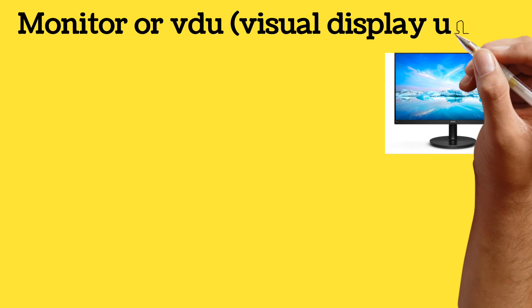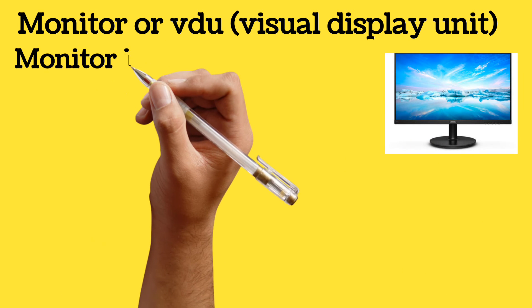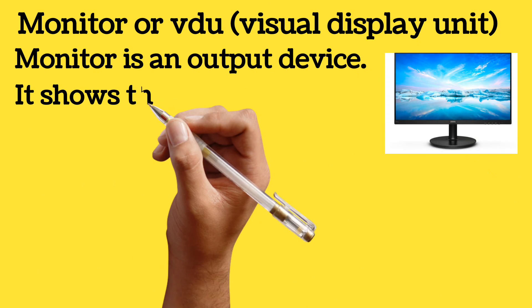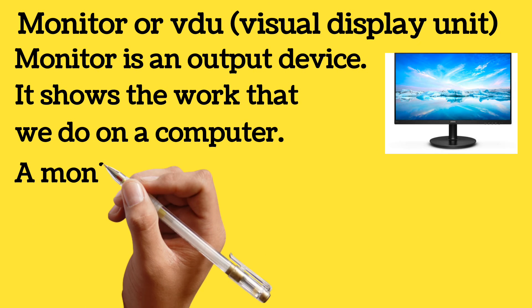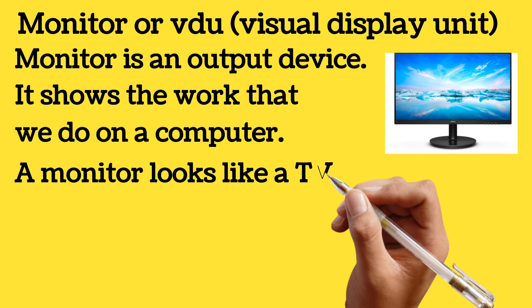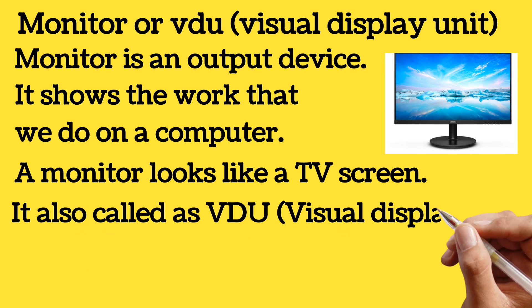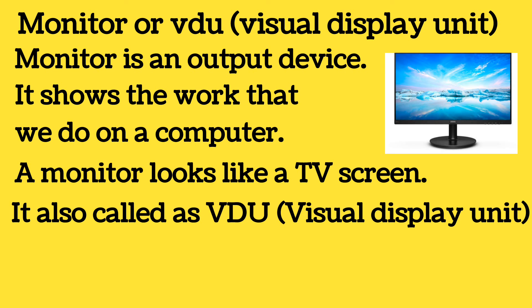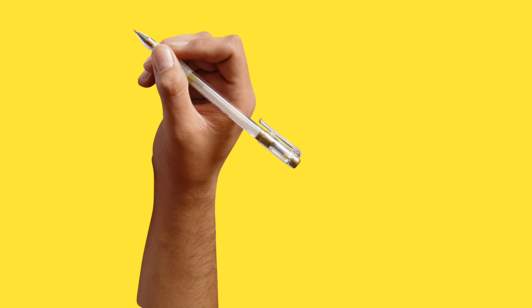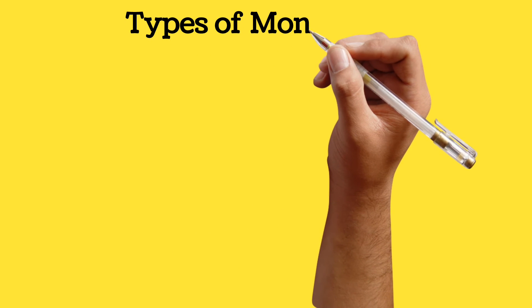Monitor, or VDU — Visual Display Unit — is an output device. It shows the work that we do on a computer. A monitor looks like a TV screen. It is also called as VDU, Visual Display Unit. Monitor output device hai aur ye TV screen ke tarah dekhne mein hai.